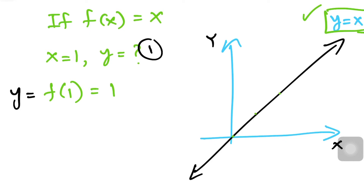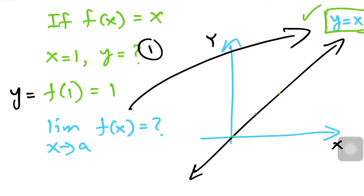In limits, the idea is almost the same — almost, but not exactly. So if someone asks for the limit as x approaches one of f(x) = x, the answer is going to be one, because if x is one the y-value is also one.